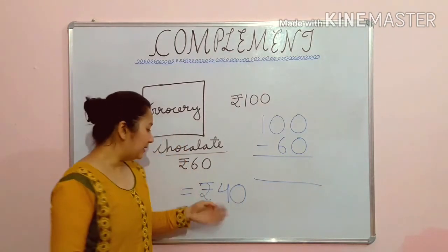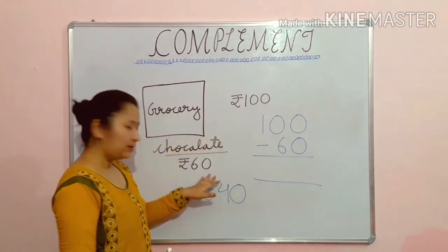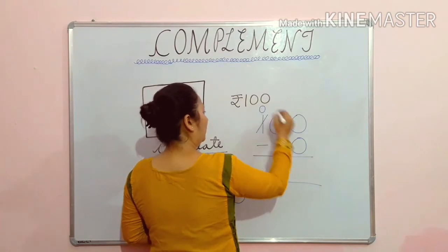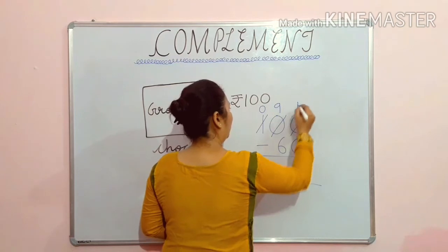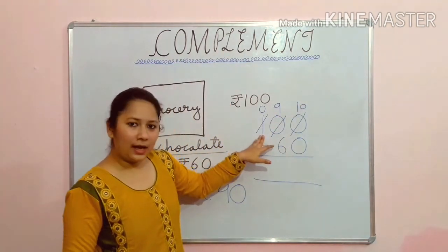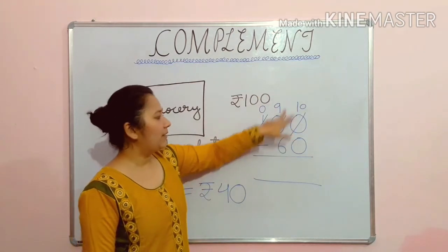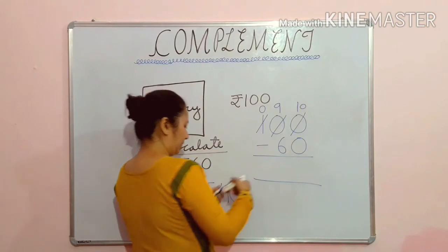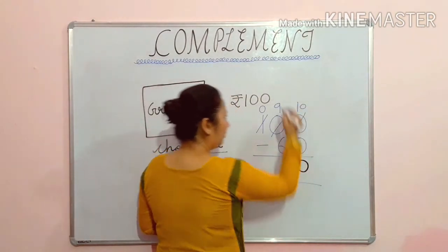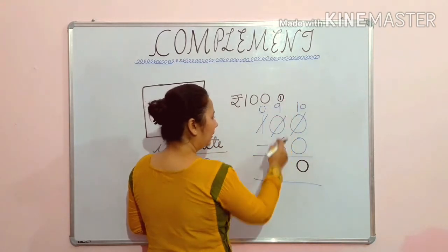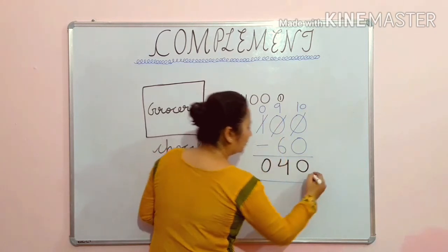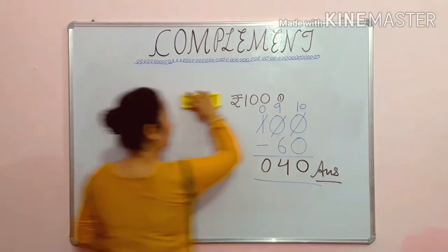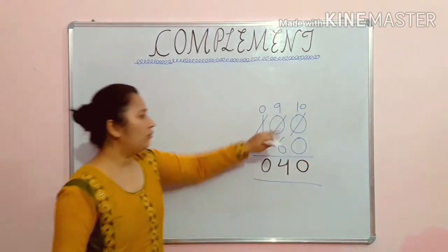Students whose calculations are very good do this in their mind: 100 minus 60 is rupees 40. The shopkeeper will return you rupees 40. But some students who can't do this subtraction in their mind write it out step by step — taking carry from each column.